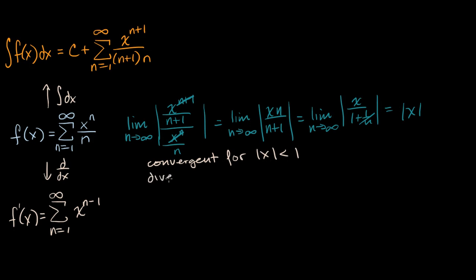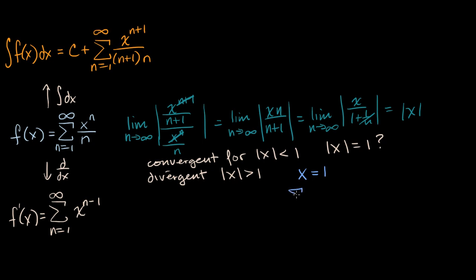We know that we are divergent when the absolute value of x is greater than one. But what about when the absolute value of x is equal to one? That's where the ratio test breaks down — we have to test that separately. So let's look at the scenario where x is equal to one. When x equals one, this series is the sum from n equals one to infinity of one to the n over n, which is just one over n.